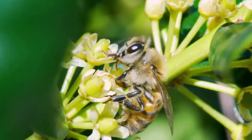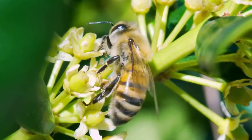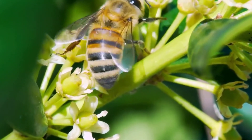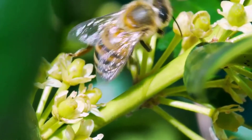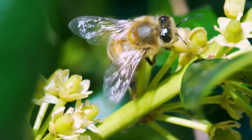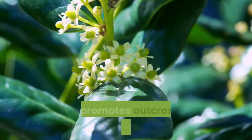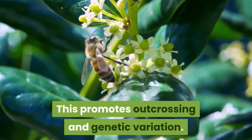Many flowering plants have evolved mechanisms to prevent self-pollination, which means that pollen must be transferred from the anthers of one flower to the stigma located on another. This promotes outcrossing and genetic variation.